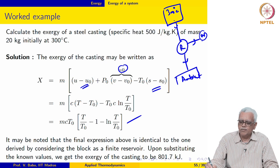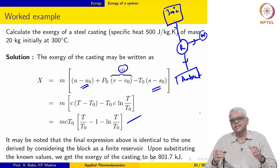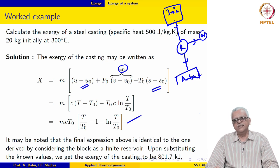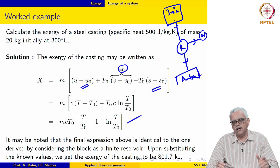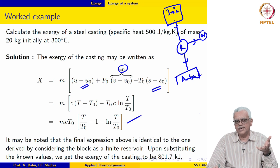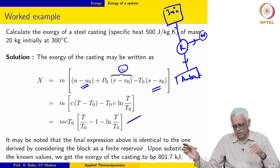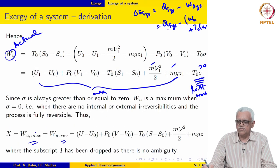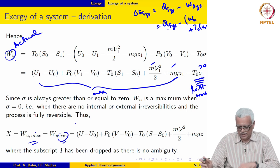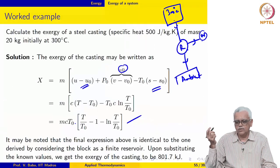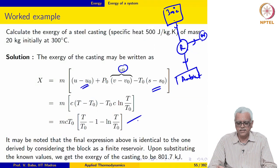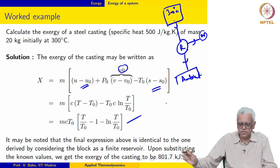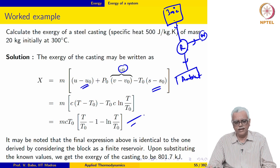The maximum work was possible if we use a reversible engine. The definition of exergy builds that in automatically — when we defined exergy we said maximum possible work, and we argued that work is maximum when internal and external irreversibilities are zero, meaning a perfectly reversible process. That is built into the definition of exergy, and the expression may be used in a straightforward manner to evaluate this.